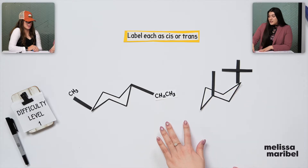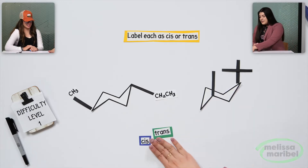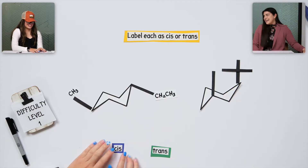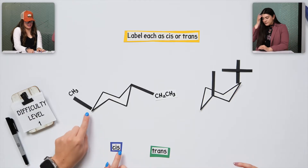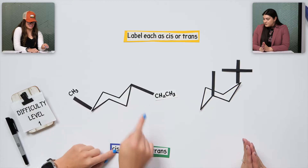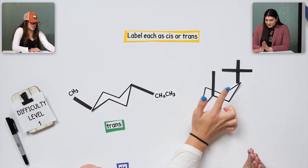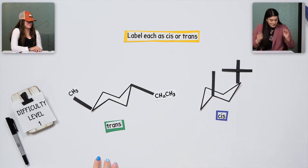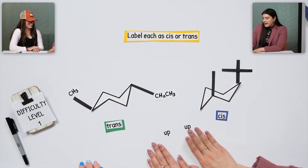For these, let's label each as either cis or trans. So cis is same and trans is opposite. I'm looking at where the branching is happening. Like this is going up and this is going down, so I know that's trans. And then these both are going up so I know that's cis. That's exactly correct — that's exactly what we're looking at.